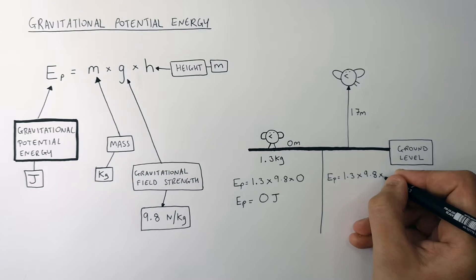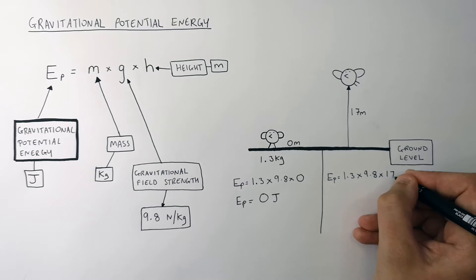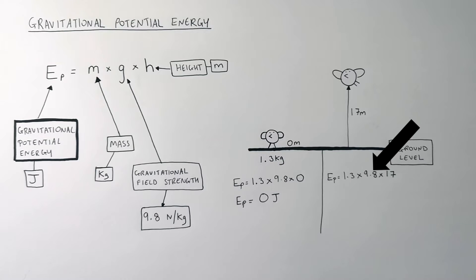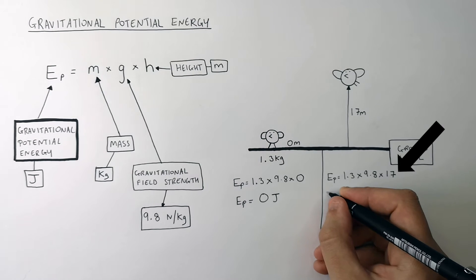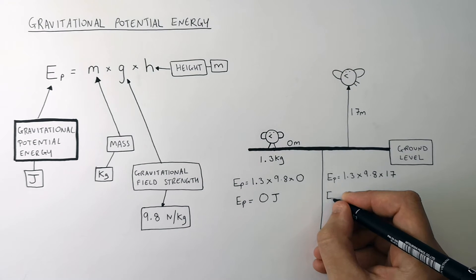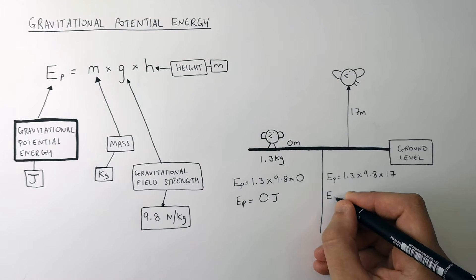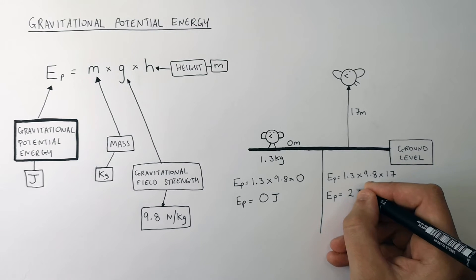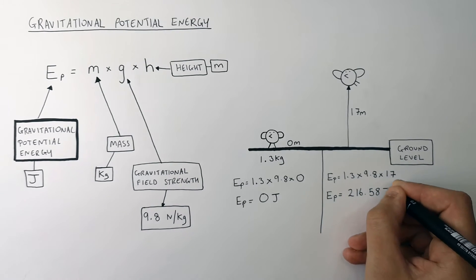However, what does change is the height. The bird is now 17m above ground level, which means we multiply the mass (1.3) times the gravitational field strength (9.8N per kilogram) times 17m. That gives the gravitational potential energy stored in the bird at this height of 216.58 joules.